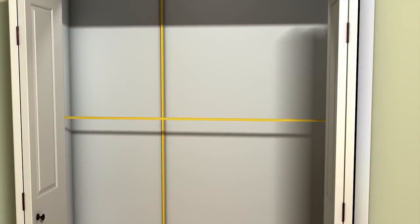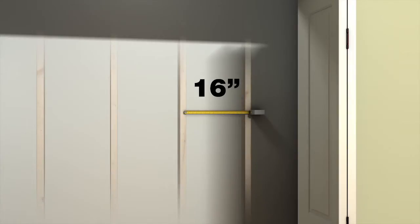Step 1. Measure your closet space, both length and height. In traditional construction, the studs behind the wall board are spaced 16 inches, center to center.